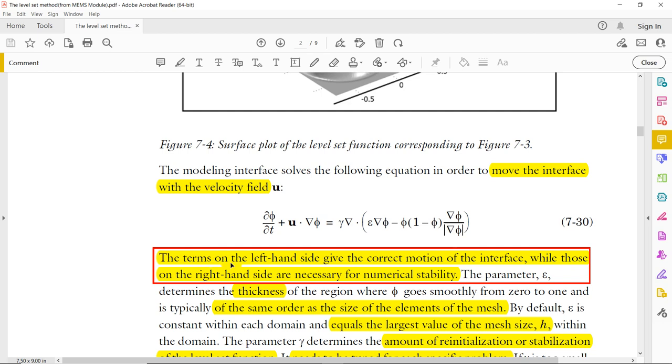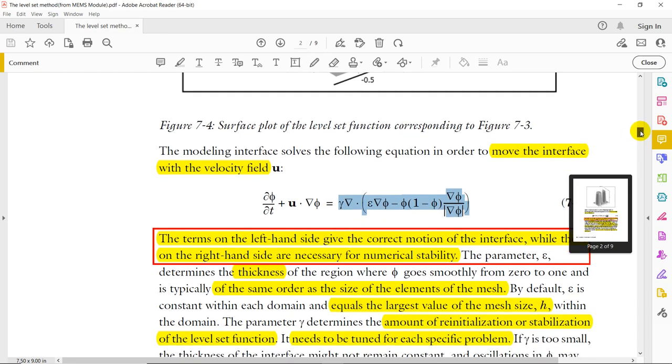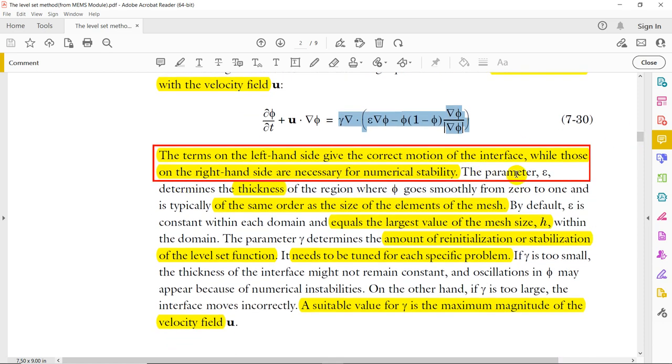So, that's why they are telling the terms on the left hand side give the correct motion of the interface while those on the right hand side are necessary for the numerical stability. So, this is a very important statement. What they are telling is, this term is basically necessary for the numerical stability. Otherwise this equation that is dφ/dt plus u·∇φ could have been zero, but this is not zero because our interfacial thickness and all, this gamma is not zero and this epsilon is not zero, so this is not zero. So this is exactly what we use as a level set equation and this particular function represents the numerical stability. I am not telling, this is told by COMSOL itself.